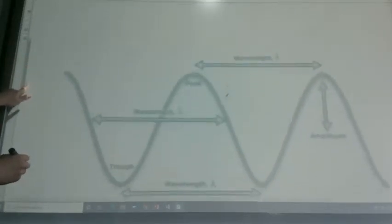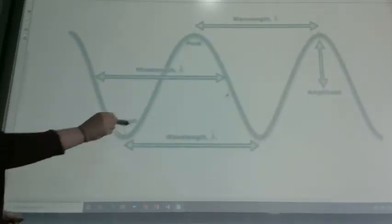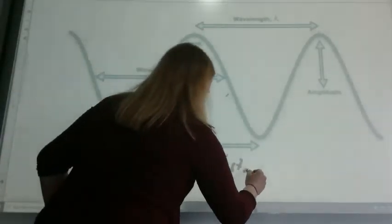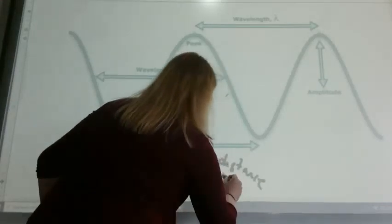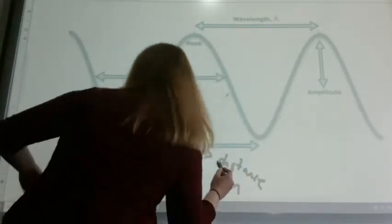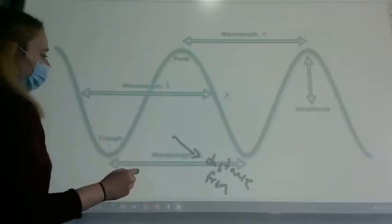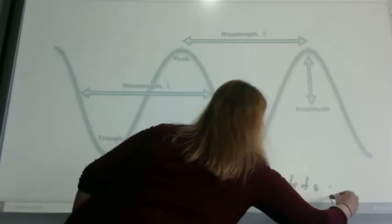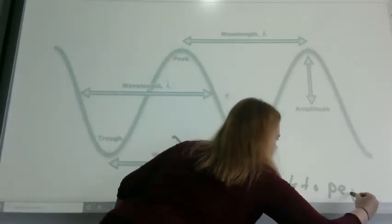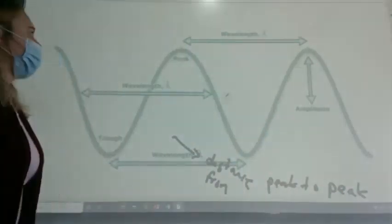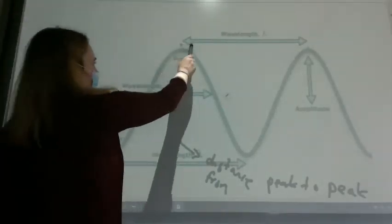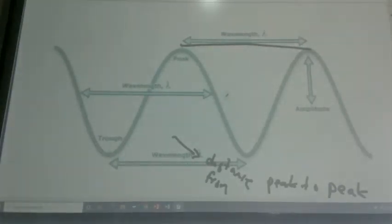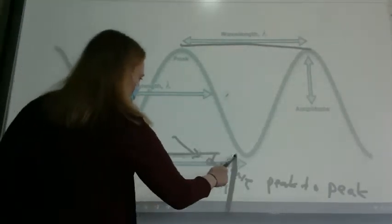So we look at the difference between wavelengths. So the definition of wavelength, right, is the distance from peak to peak to peak in a wave. So here, this distance from peak to peak in the wave of light, or it also could be from trough to trough into the wave one.